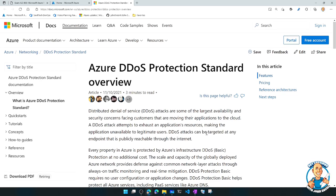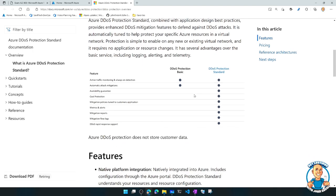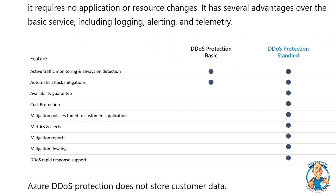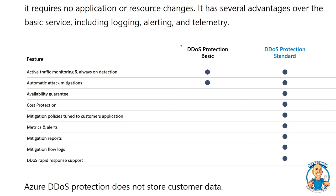So it goes through and it's showing me, this is what we get with the free basic. And remember, this is all I can do if I have a resource that does not exist within a VNet. I cannot apply standard if it doesn't live within the VNet. So I get the active traffic monitoring and always-on detection and automatic attack mitigations.